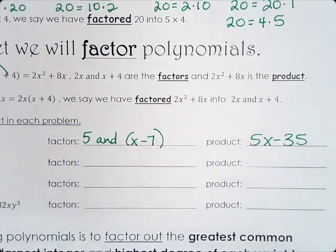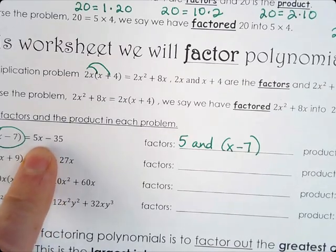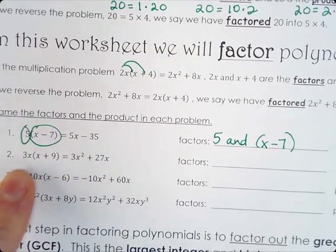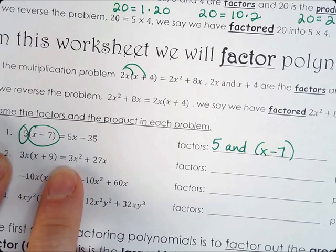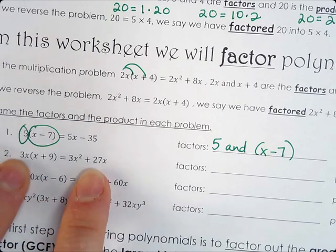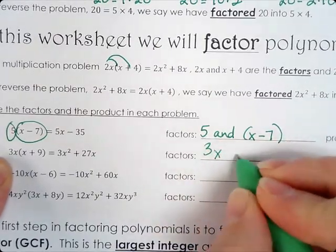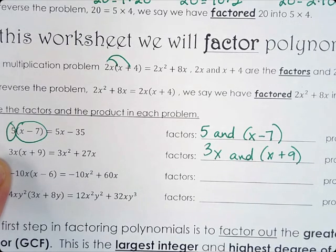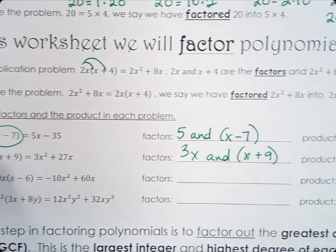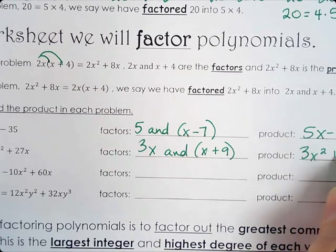With factoring, the kind of problems you'll be given is 5x minus 35, and you'll be asked to factor it — so you look for your greatest common factor. The next one says 3x times (x plus 9) equals 3x squared plus 27x. That 3x is being distributed, so our factors are 3x and (x plus 9).